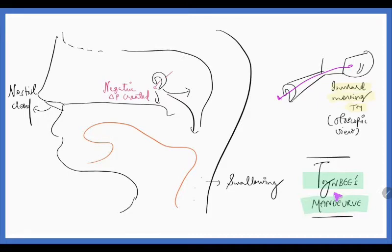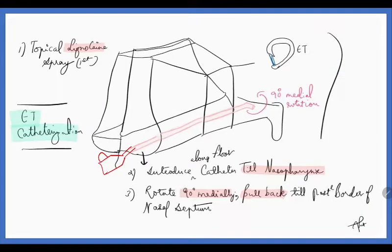Next is Toynbee's test. Remember Toynbee N, N for negative. We are creating negative pressure in the nasopharynx. How? Simple. Close the nasal cavity nostrils and swallow. In that time, we are creating negative pressure in the patient's nasopharynx. Thereby, this negative pressure will pull the tympanic membrane inward. This inward moving of tympanic membrane can be appreciated using an otoscope. This is called Toynbee's maneuver.